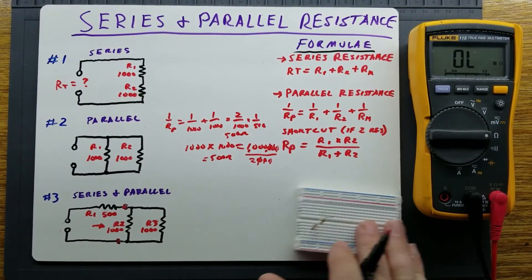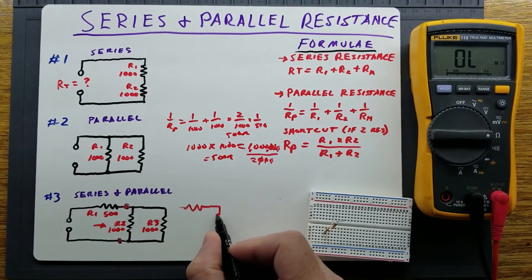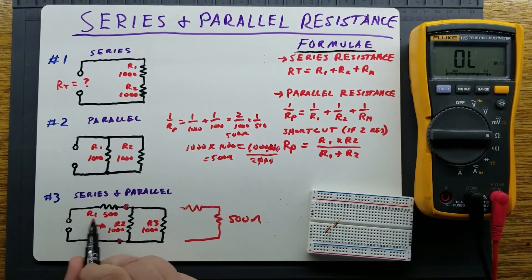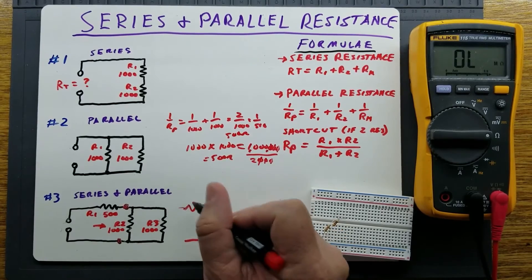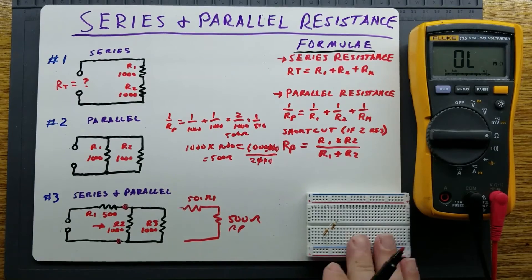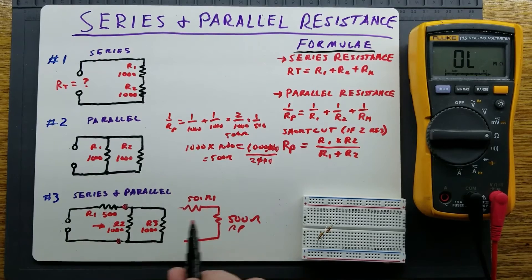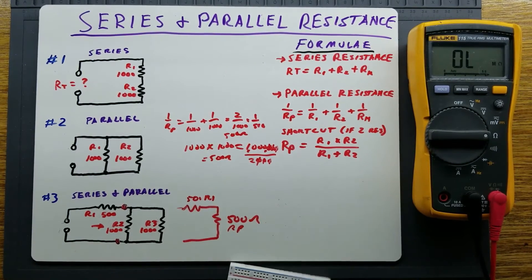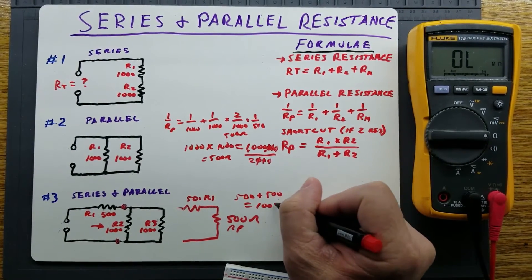This is really the equivalent of having a 500-ohm Rp, plus another R1 which is also 500 ohms in series. The total resistance then, based on the series resistance formula, would be 500 plus 500, which is equal to 1,000 ohms.